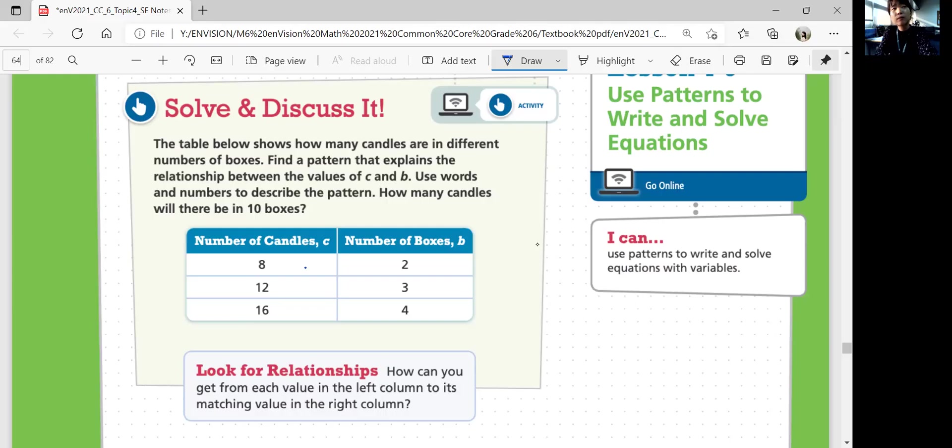8 divided by 4 is 2. 12 divided by 4 is 3. And 16 divided by 4 is also 4. So do we have a pattern? Same pattern for all these values. Yes, we do.